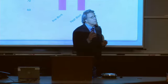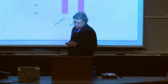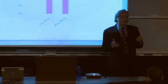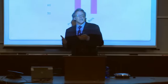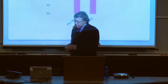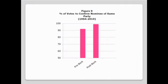But on closer examination, it becomes more complicated. As Figure 8 reveals, in the pre-Bork era, senators cast 82% of their votes to confirm, whereas in the post-Bork era, they cast only 77% of their votes to confirm. That suggests the Bork nomination may have had some impact on the deference senators traditionally brought to the confirmation process. As Figure 9 reveals, there's clearly been a change in partisan voting. In the pre-Bork era, senators voted 66% of the time to confirm candidates nominated by a president of the opposing party, whereas in the post-Bork era, this figure has fallen to 55%.